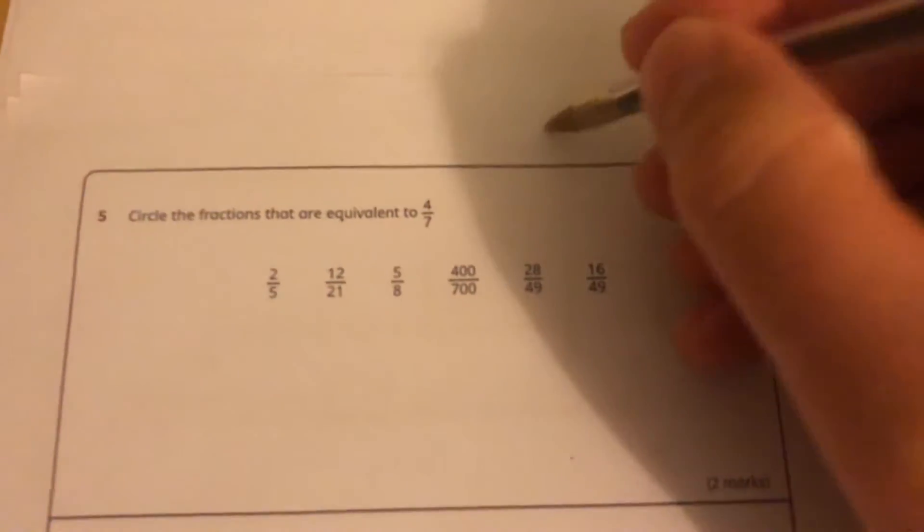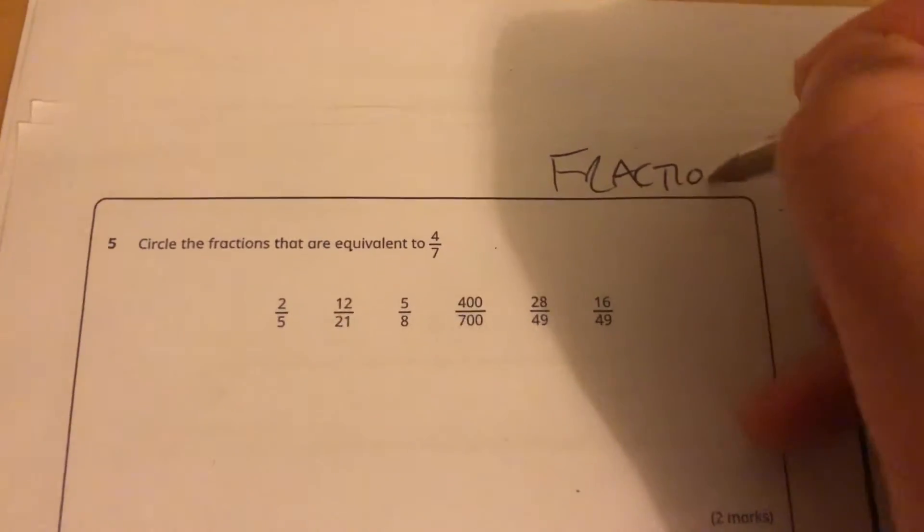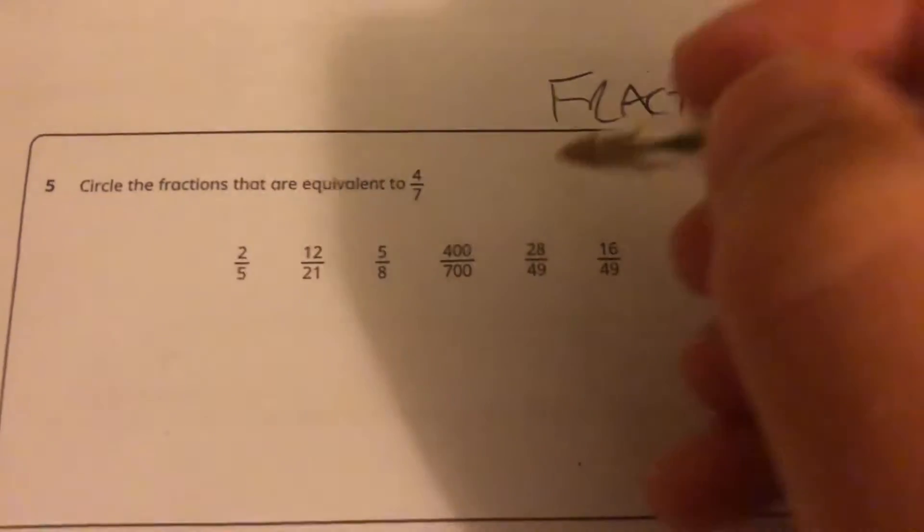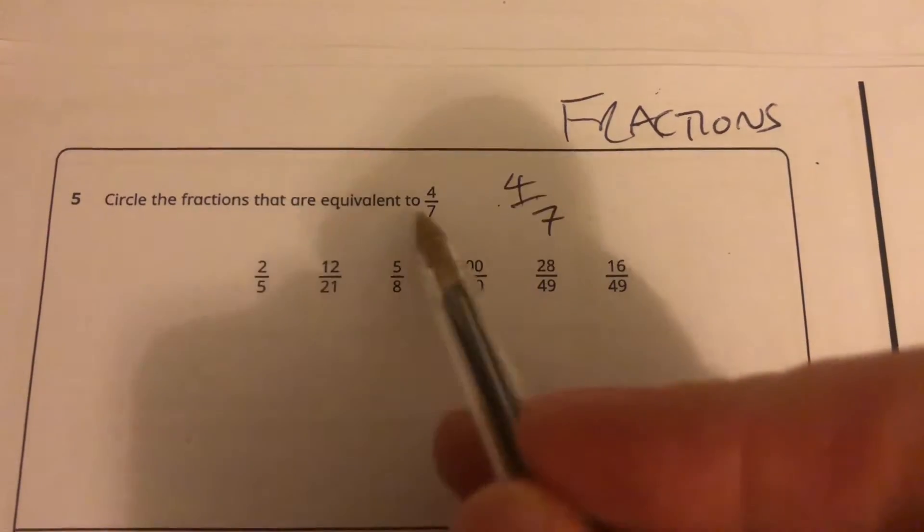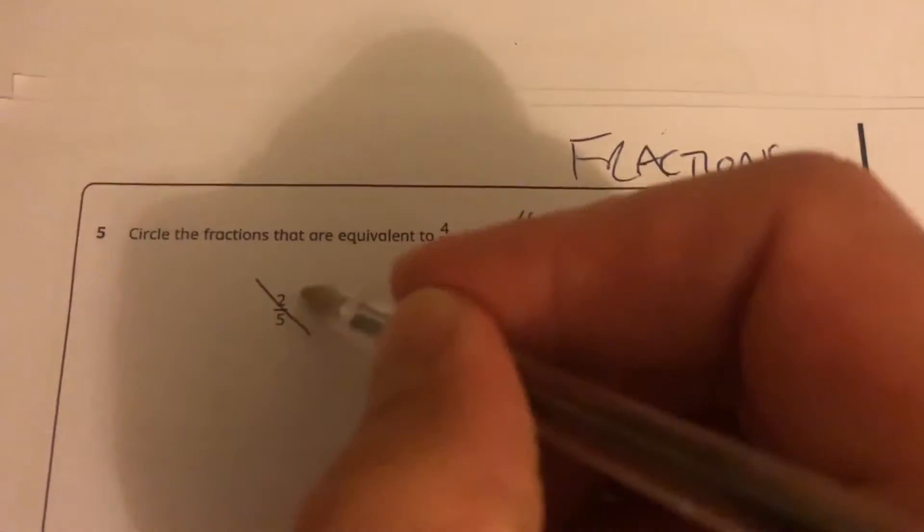I'm going to go to this question here about fractions. Fractions is something I feel confident with. Circle the fractions equivalent to 4 sevenths. 4 to 2 is divided by 2, 7 hasn't been divided by 2, so it can't be that one.